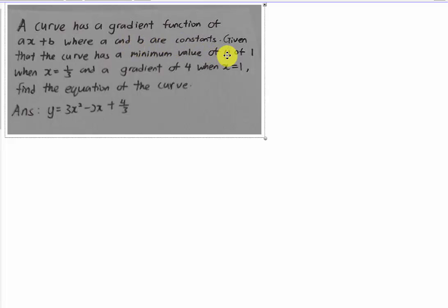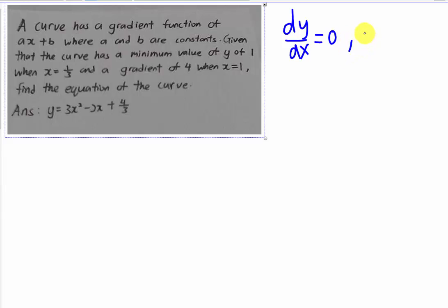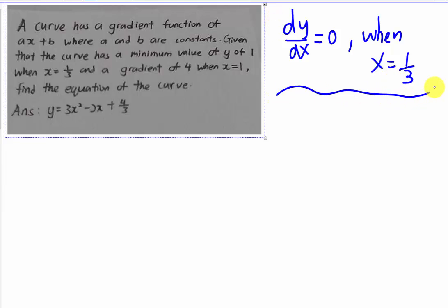Given that the curve has a minimum value of y equals 1 when x equals 1/3. When you see minimum value, the first thing coming to your mind is something to do with dy/dx. We know that at a minimum or maximum, dy/dx equals 0 when x equals 1/3. At the same time, y equals 1 and x equals 1/3 means this is a coordinate on the curve — the minimum coordinate is (1/3, 1).